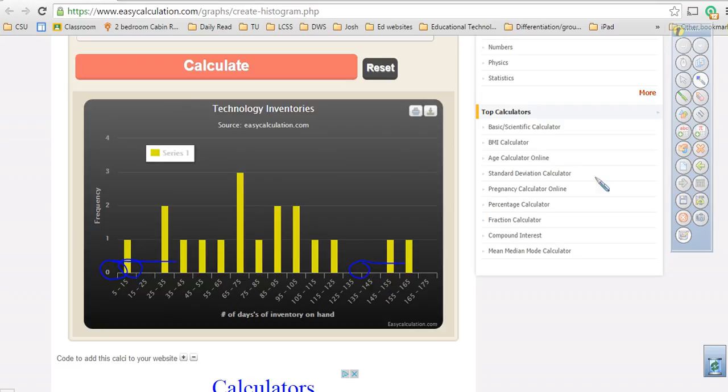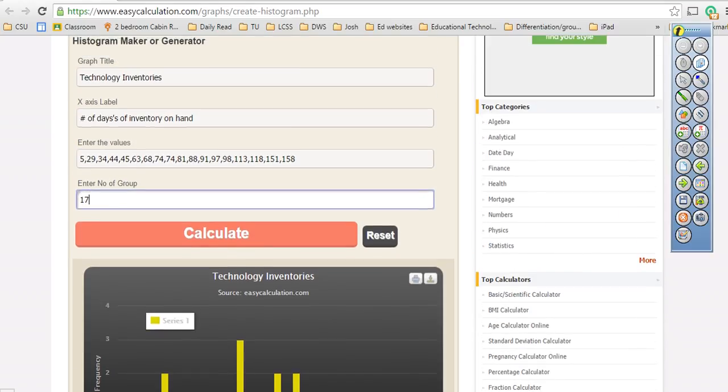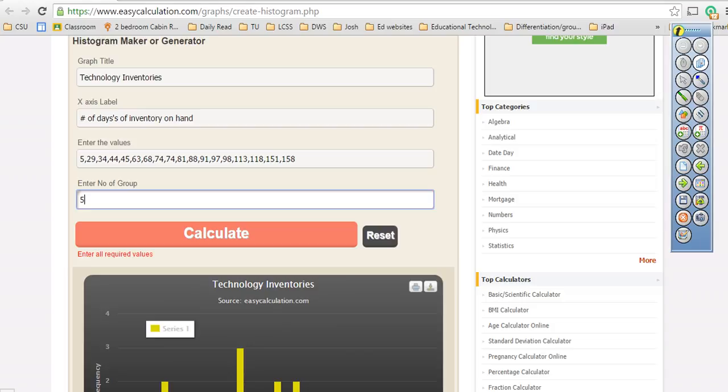So just kind of keep that in mind. Because of the size, the point of what I'm saying here is because of the size of our data set, let's keep that class size down to the minimum, somewhere around 5, 6, 7. Alright? And so that way we can take a look at your distribution.